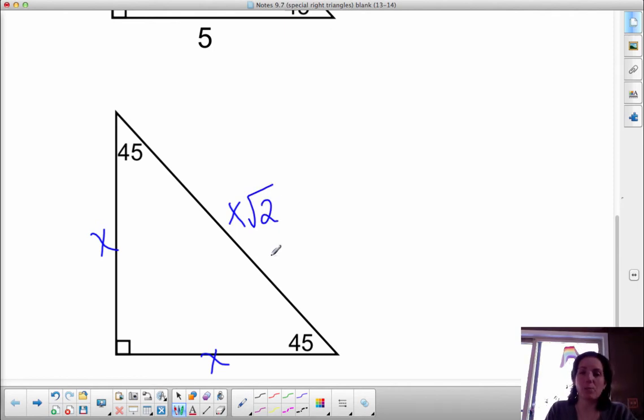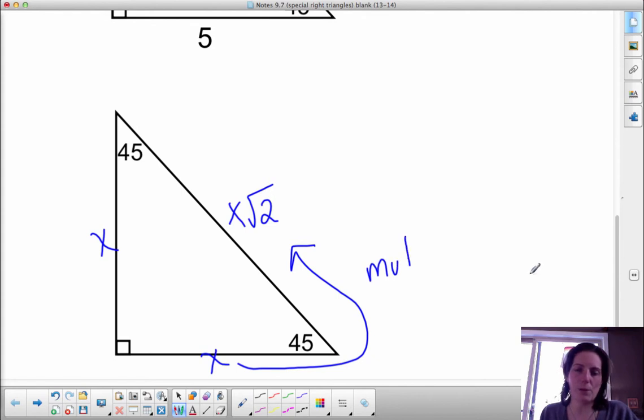Now the tricky part's going to come when we have to go in the other order. When I give you the hypotenuse, and you have to find a leg. It's tricky because of the algebra, not because of the geometry. Because in the geometry, it tells us that if we're going to multiply to make it bigger, then we have to divide it to get it smaller. So I would draw an arrow like this. If we're going from a leg to the hypotenuse, you need to multiply by square root of two.